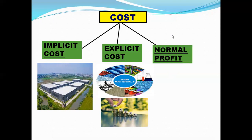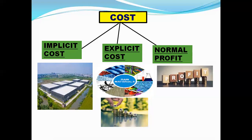The third type is normal profit. Normal profit is the minimum payment which a producer must get in order to undertake the risk of production. Because if the producer does not get minimum profit, he will not do production. So these are the three types of cost.